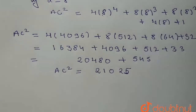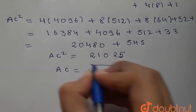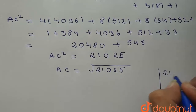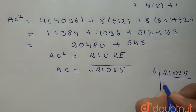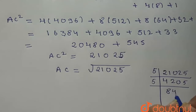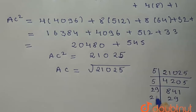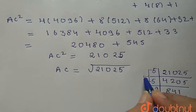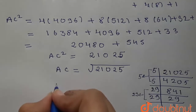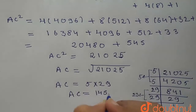We have to find AC, so AC is equal to the square root of 21025. To calculate its factors: 21025 divided by 5 is 4205, divided by 5 is 841, and 841 is 29 squared. So taking one 5 and one 29 out, AC is equal to 5 into 29, so AC is equal to 145.